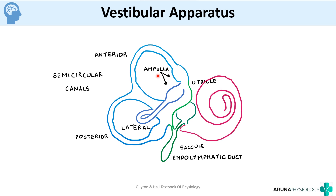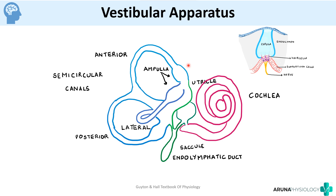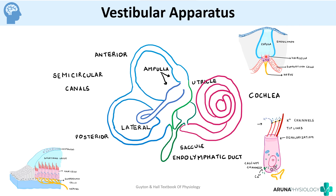The utricle and saccule are structures specifically for detecting linear acceleration. The cochlea is the organ for hearing. Inside the ampulla of the semicircular canals and inside the utricle and saccule we have different sense organs. The sense organ in the semicircular canal is called the crista ampullaris, while the sense organ in the utricle and saccule is called the macula.